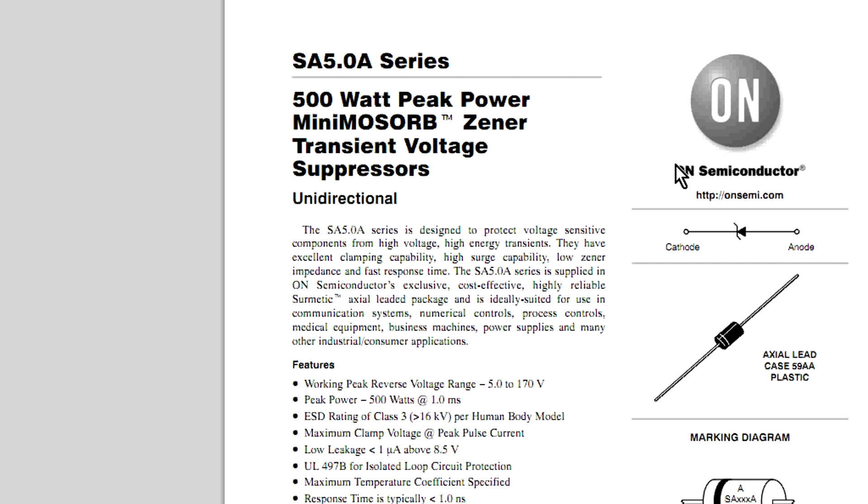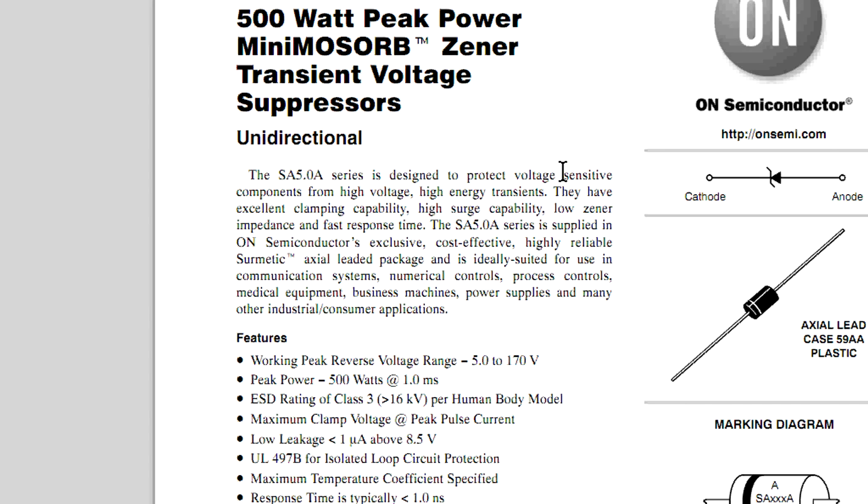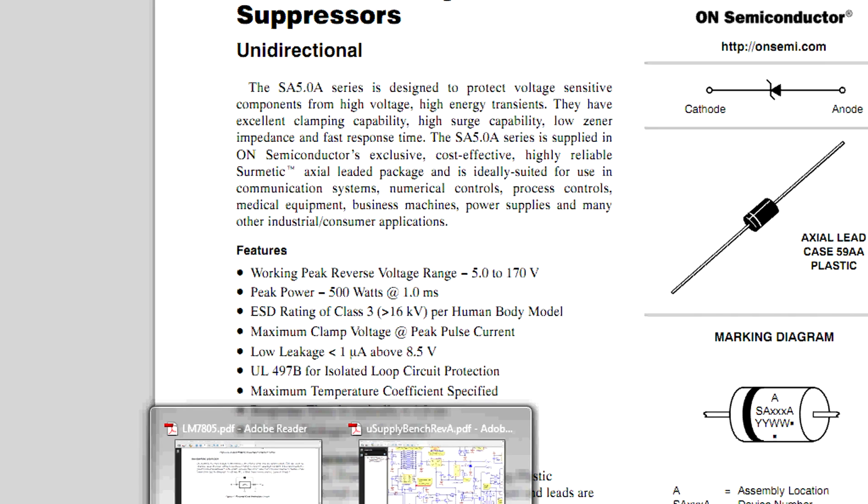Or a better solution might be one of these TVS's or a transient voltage suppressor. They're also called transorbs and all sorts of other trademark names like that from various manufacturers. And they're basically a zener diode, a high energy zener diode to protect you against overvoltage conditions. And they're really nice.